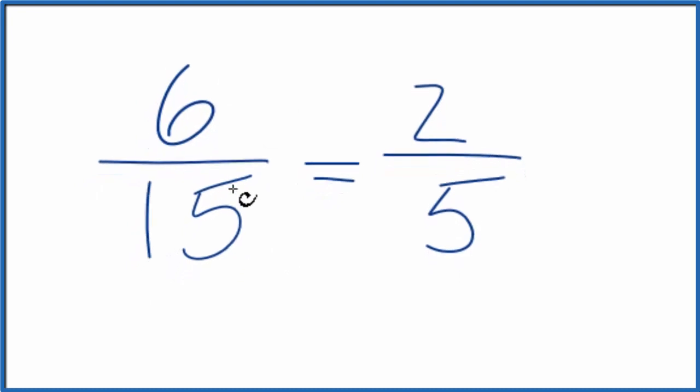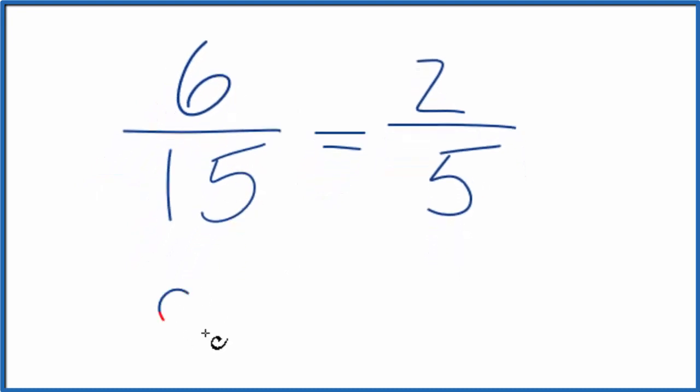If we change these to decimals, dividing 6 by 15 gives 0.4. If we divide 2 by 5, we also get 0.4.